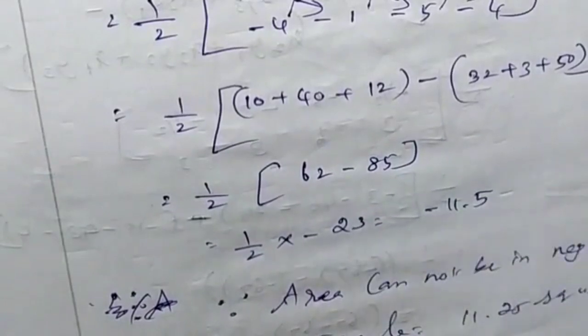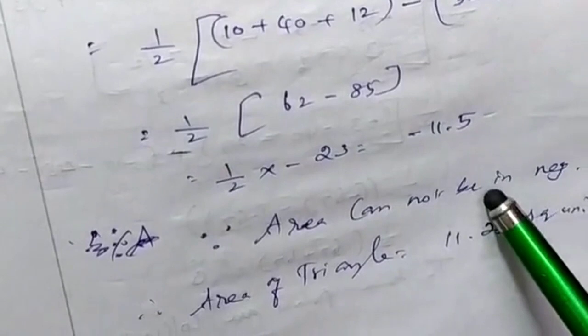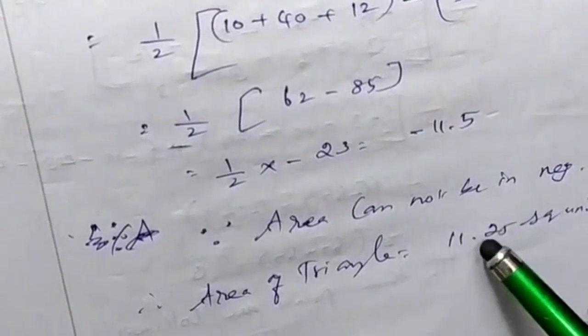So this is negative. But area cannot be negative, so this triangle is 11.25 square units.